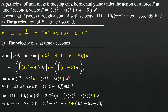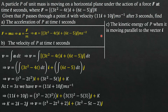We replace the constant of integration 2i − 2j back into our expression, bringing the i-terms together and the j-terms together. The velocity of particle P in terms of T is: v = (T³ − 2T² + 2)i + (3T² − 5T − 2)j meters per second.